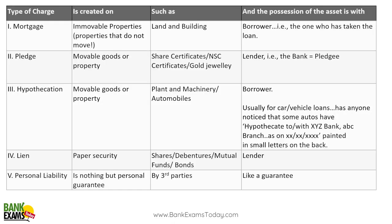These are the categories of charges. There is mortgage, pledge, hypothecation, lien, and personal liability. This is a very useful table — if you are able to remember it, the whole chapter is covered. Mortgage is on immovable property, for example house, land, or building. The borrower has possession. A home loan is a very good example of mortgage.